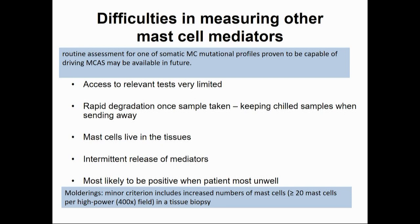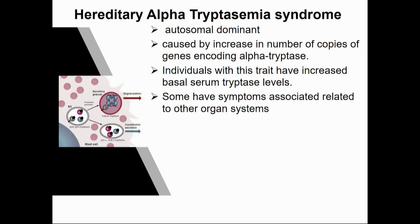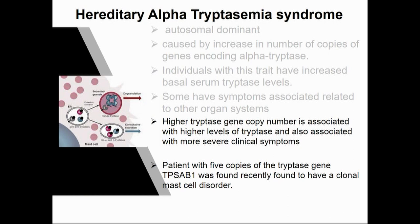Hereditary alpha tryptasemia, or hereditary hyper tryptasemia, is an autosomal dominant condition and we're learning more about it. I've sent a large number of samples to Peter Arkwright for analysis. Higher tryptase gene copy number is associated with higher tryptase levels and more severe clinical symptoms. But in one of our families tested, the father of the index case — who has never had any symptoms — has a tryptase level of 90. So we've still got a lot to learn about this as a syndrome. It seems a number of people will have raised tryptase but not have the actual syndrome.